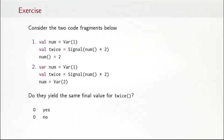So here's an exercise for you. Consider those two code fragments. The first one says num = Var(1). And we have a signal twice that is Signal(num() * 2). And then we update num() = 2. And the second one is quite similar. So we start with a var num = Var(1). The signal twice is as before. But finally, we define num = Var(2). Are those two code fragments equivalent? That means, would they yield the same final value for twice? Yes or no?